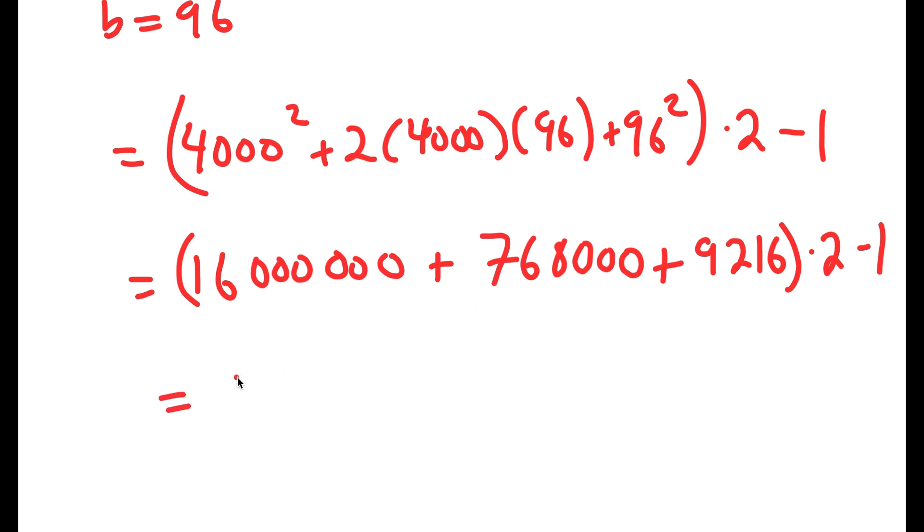Now I'm going to add all of these up. So if I add all of these up in the parentheses, I get 16,777,216. So now I have this times 2 minus 1.